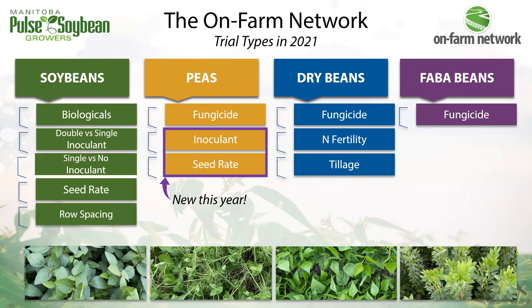The broader trial types we conducted last year include inoculants, seeding rates, row spacings, and more. We were still able to have some fungicide trials this year, though that number was walked back a bit. I'd like to briefly cover results from each trial type, with a deeper dive into soybean row spacing, pea seeding rate, and driving nitrogen and tillage.